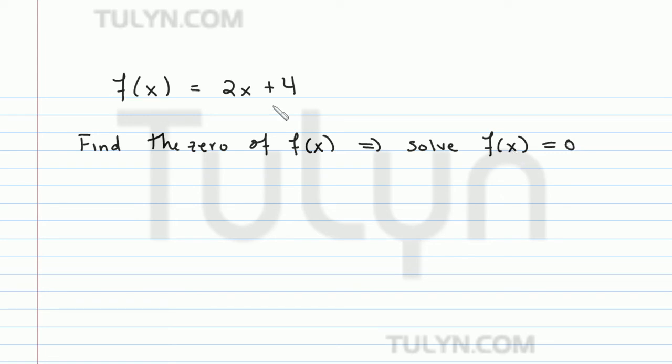Replacing f(x) with 2x + 4, we want to find where 2x + 4 = 0. We want to find the values of x which give 2x + 4 equal to 0.